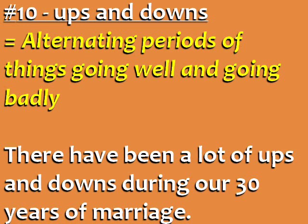Number 10: Ups and downs. Alternating periods of things going well and things going badly. For example: There have been a lot of ups and downs during our 30 years of marriage.